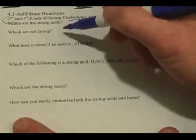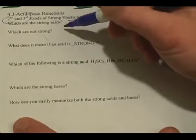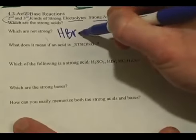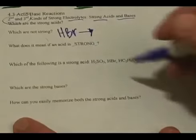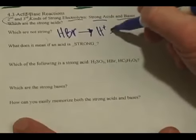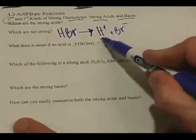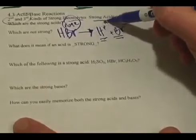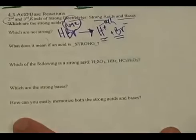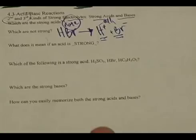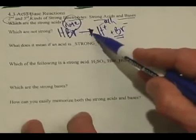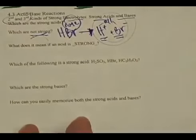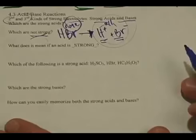We said the strong acids and the strong bases had an easy way to memorize them. But what makes them special? Take, for example, HBr (Hyber). The reason it's special is because when it dissolves in water, it forms H+ and Br−, and completely dissociates or breaks up to form these ions. There is none of the original compound left — it's all ions. It's the non-strong ones that actually become very interesting to us in chapters 16 and 17.